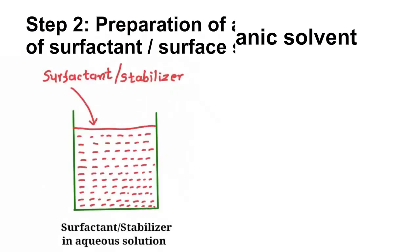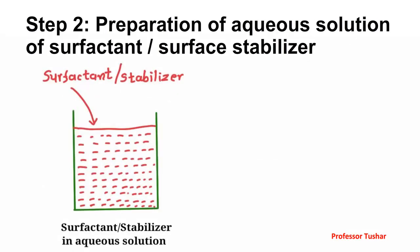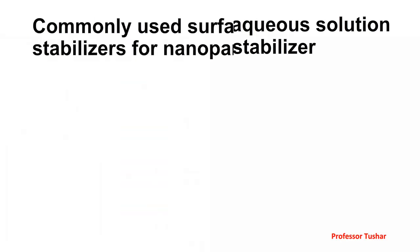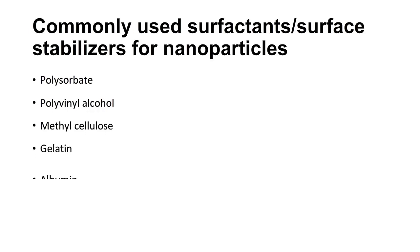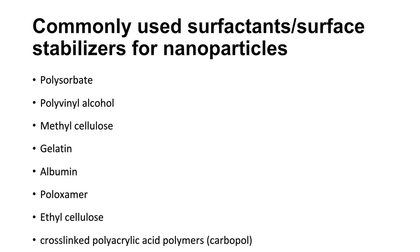The second step is the preparation of an aqueous solution of surfactant or surface stabilizer. Commonly used surfactants or surface stabilizers for nanoparticles include: Polysorbate, Polyvinyl alcohol, Methyl cellulose, Gelatin, Albumin, Poloxamer, Ethyl cellulose, and cross-linked polyacrylic acid polymers, commonly known as Carbopol.